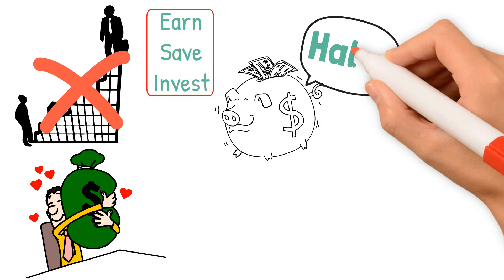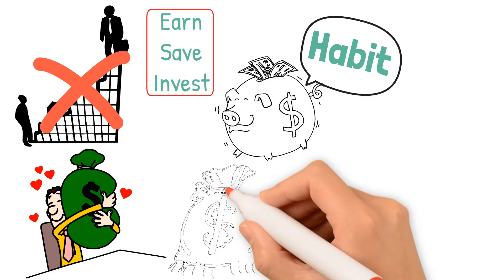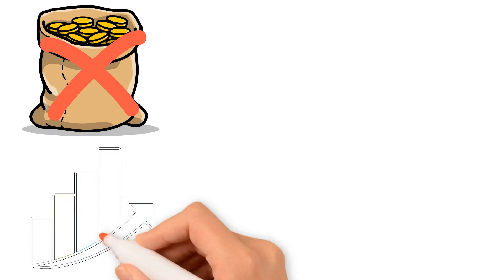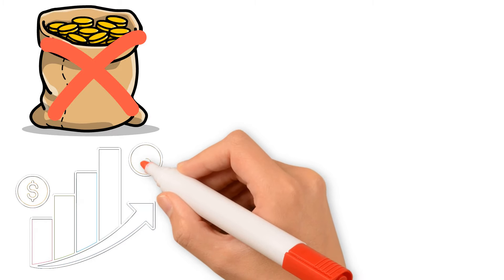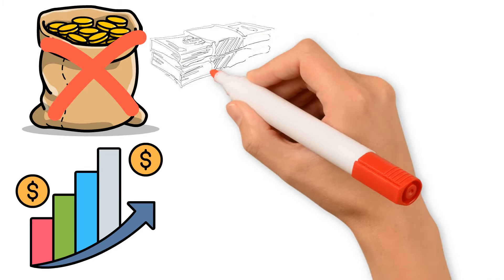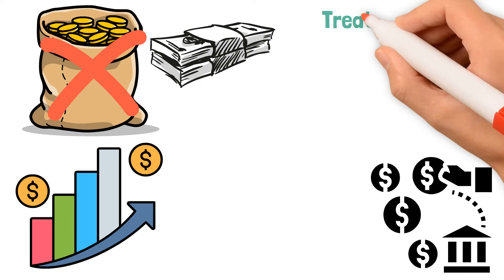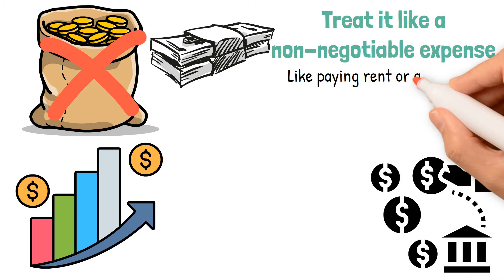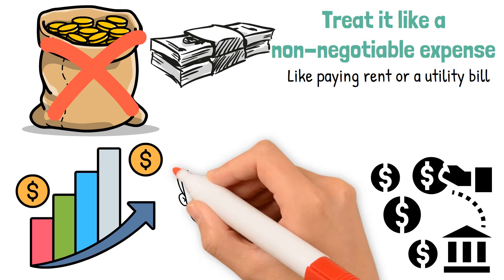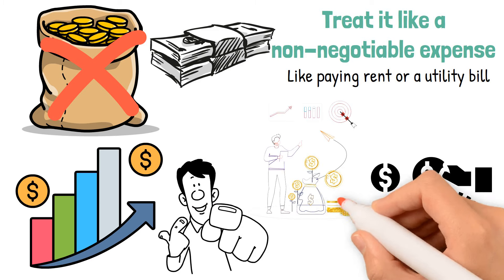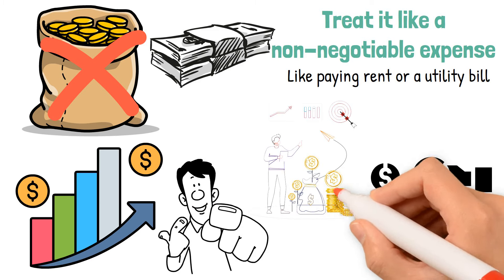Here's the key. Make saving a habit, not an afterthought. With each paycheck you receive, set aside a fixed percentage for savings. It doesn't have to be a huge amount. Even a small percentage saved consistently over time can grow into a substantial nest egg. Decide on a percentage of your income that you can comfortably save. Then as soon as you get paid, transfer that amount to your savings account. Treat it like a non-negotiable expense, just like paying rent or a utility bill. By doing this, you're ensuring that you're always paying yourself first. Over time, this disciplined approach to saving can lead to significant financial growth.